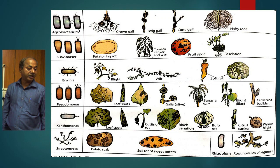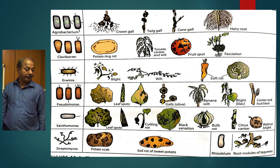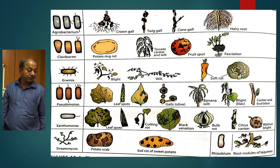Agrobacterium causes crown galls, twig galls, cane galls, and hairy root in different crops. Then Pseudomonas causes leaf spots, wilt, blights, etc. Streptomyces scabies causes potato scab and soft rot diseases. Xanthomonas citri causes citrus canker disease, walnut blight, bulb rot, and black vein disease.